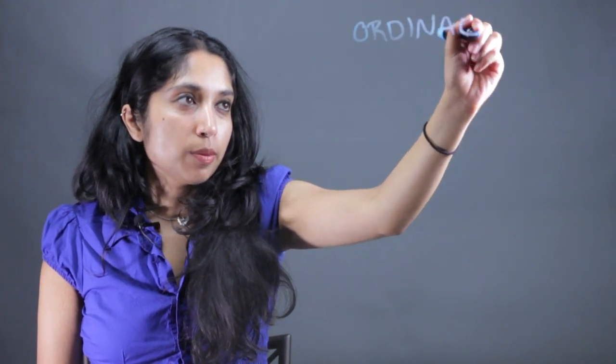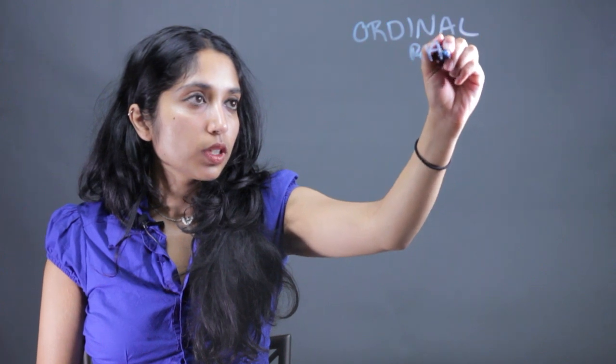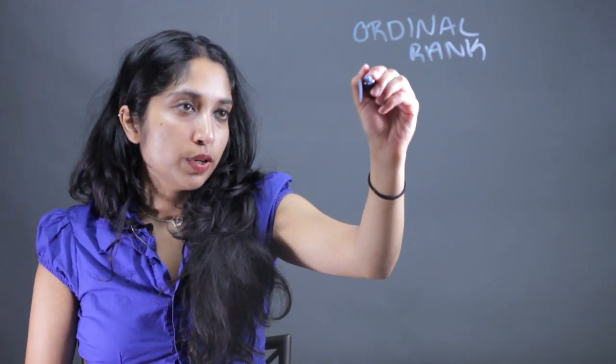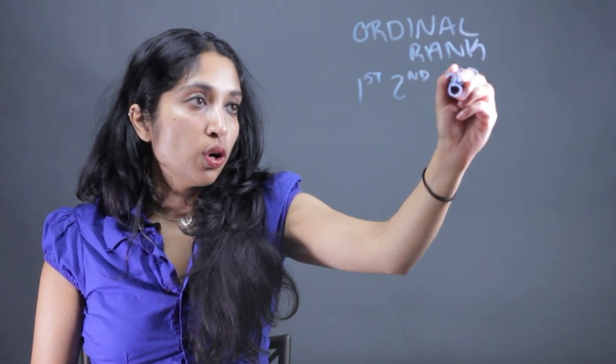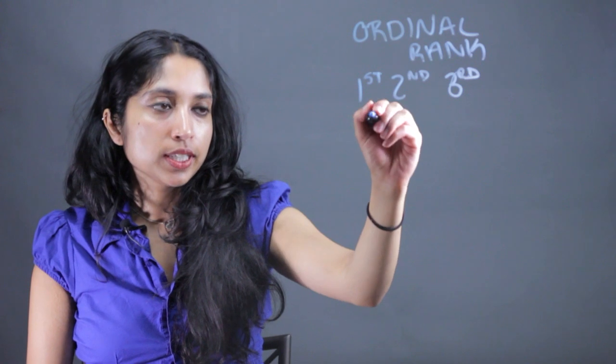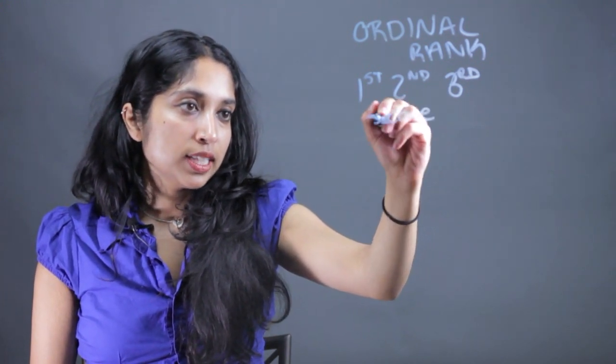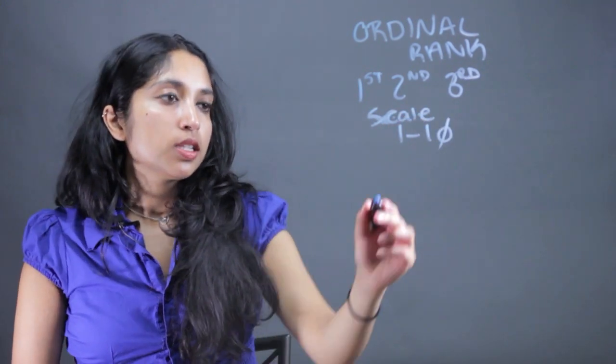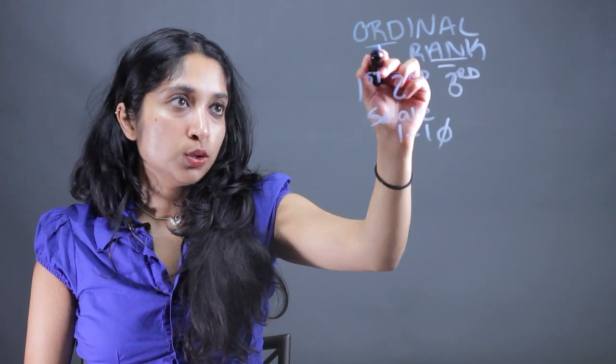So an ordinal is going to give you something that's rank. So things in relationship to another. For example, first, second, third, or sometimes satisfaction surveys like on a scale of one to ten. Tell us how satisfied you were with our popcorn stand. Something where ranking is involved or a good way to remember that is order.